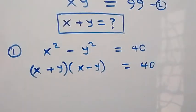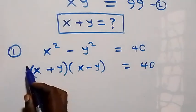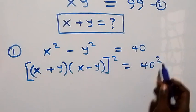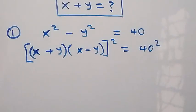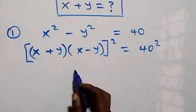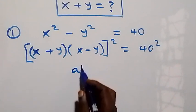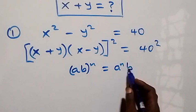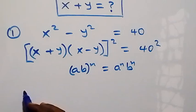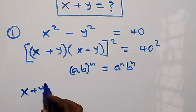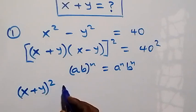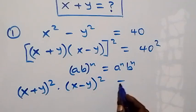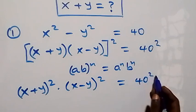The next step: let's square both sides of this equation. This square will affect each of these brackets. From the rule that (ab) raised to power n equals a to power n times b raised to power n, this becomes (x plus y) squared times (x minus y) squared equals 40 squared.